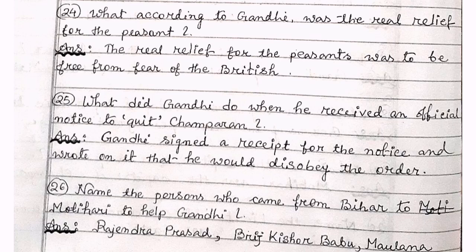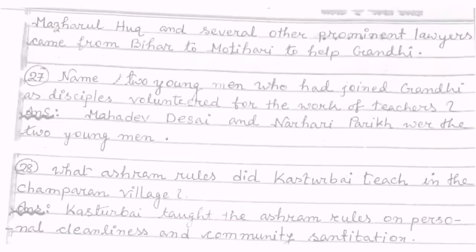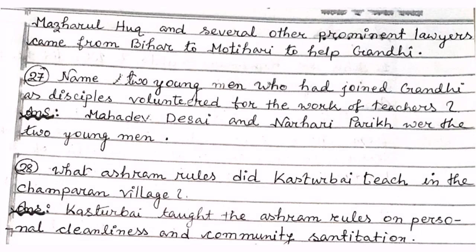Number twenty-six: name the persons who came from Bihar to Motihari to help Gandhi. They were Rajendra Prasad, Brishkumar Babu, Maulana Mazharul Haque, and several other prominent lawyers. Number twenty-seven: name the two young men who joined Gandhi as disciples and volunteered for the work of teachers. The answer is that Mahadev Desai and Narhari Parikh were the two young men.